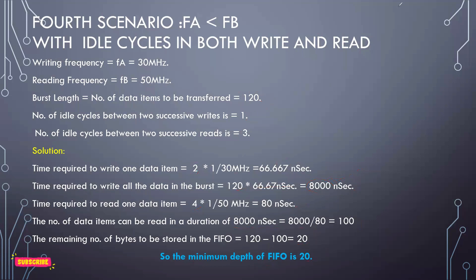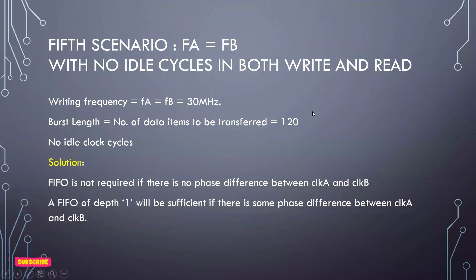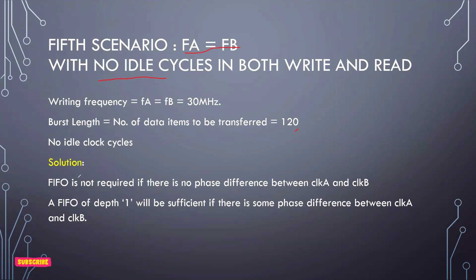Scenario 5: FA equals FB with no idle cycles. Whatever data is written is immediately taken out by module B, so there is no need for a FIFO. However, if there is a phase difference between the two modules, a FIFO of depth 1 can be used to ensure no data loss between module A and module B.